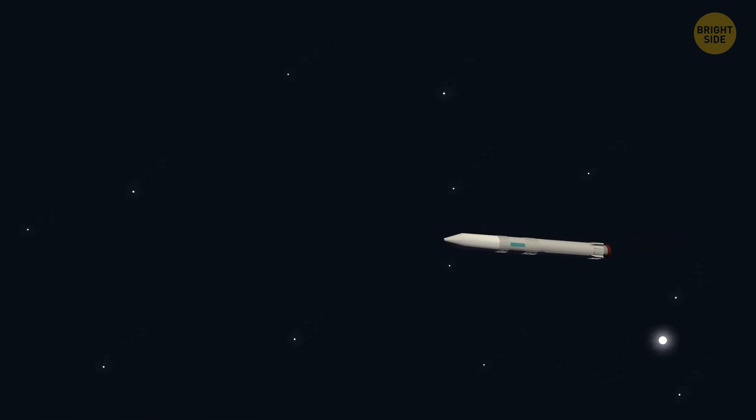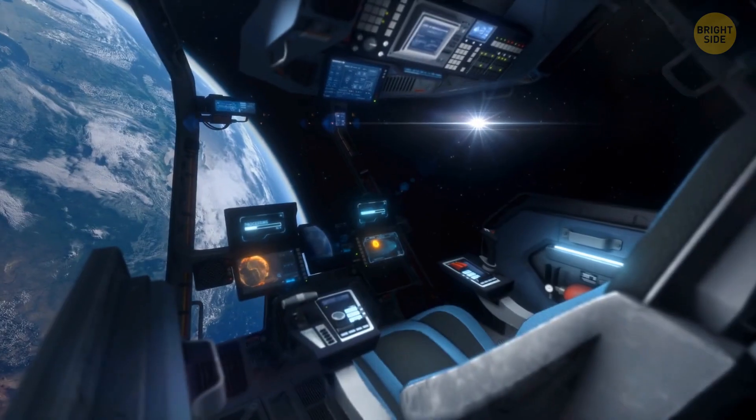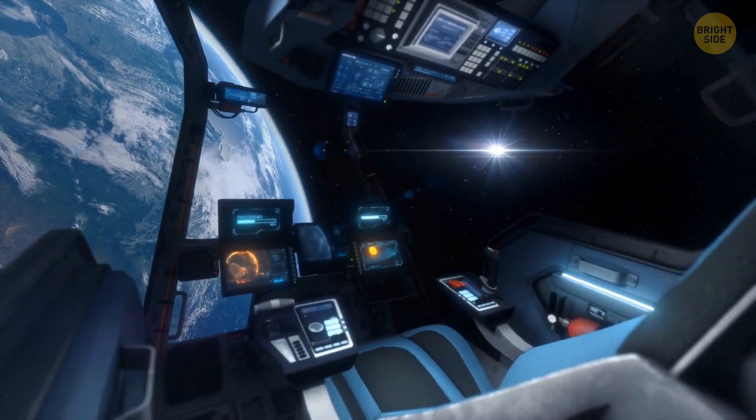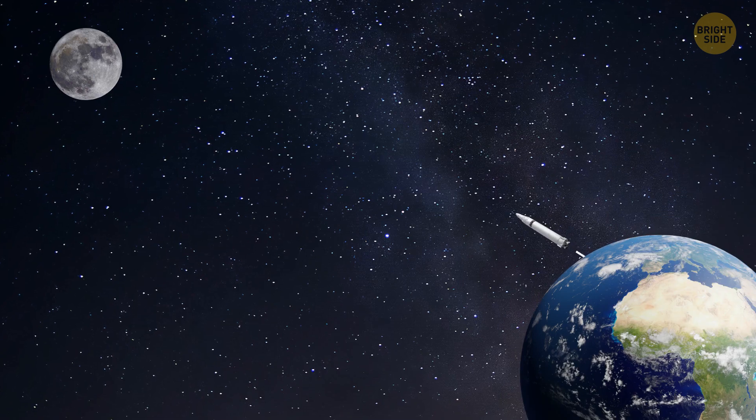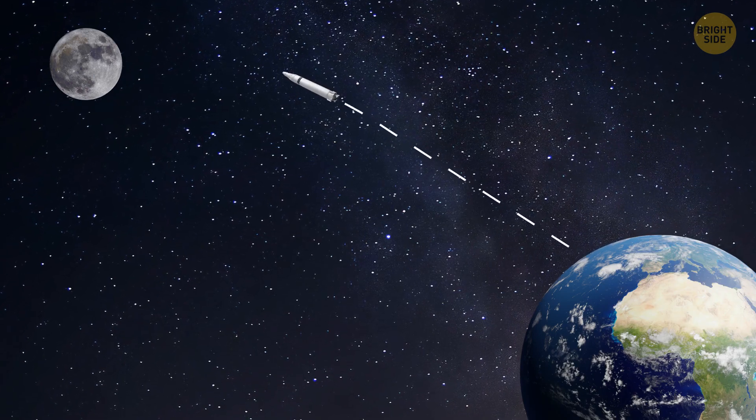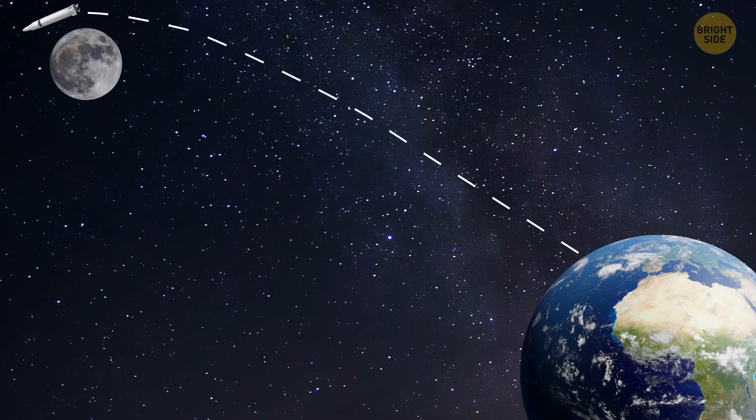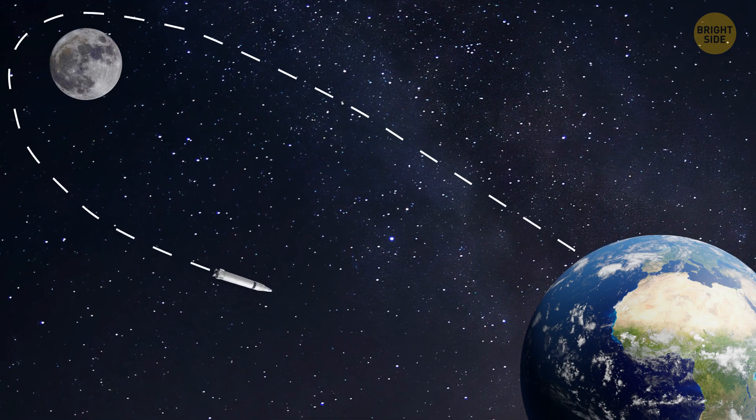To make sure this project is successful, this year, NASA launched Orion, a spacecraft with no crew on board, to orbit the moon and return to Earth. Think of it as an automated test drive. Before we actually send people out there again, we need to make sure all the devices work properly.